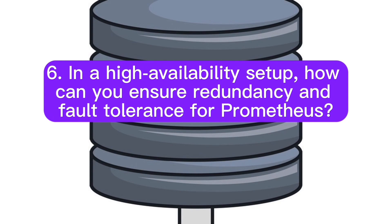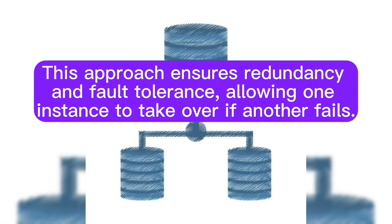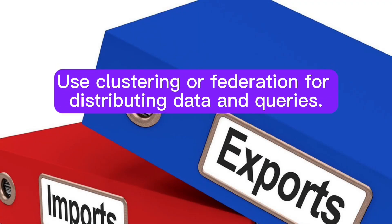In a high availability setup, how can you ensure redundancy and fault tolerance for Prometheus? For high availability, you typically set up multiple Prometheus instances and employ a shared storage backend for the data. This approach ensures redundancy and fault tolerance, allowing one instance to take over if another fails. Use clustering or federation for distributing data and queries.